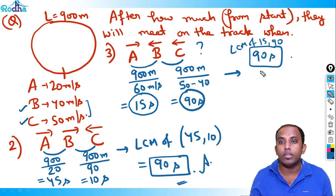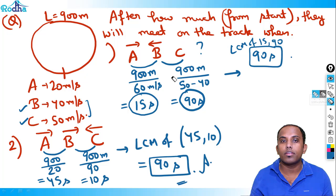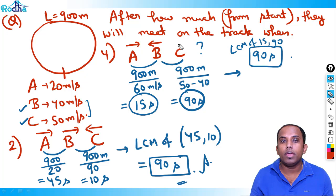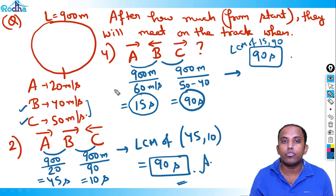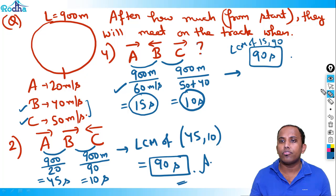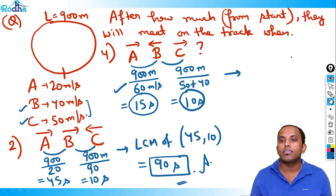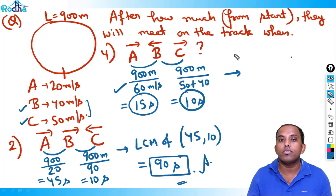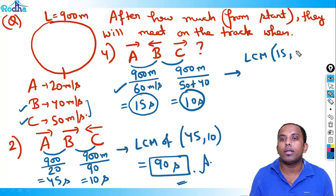Fourth case: A and B opposite, B and C also opposite. A and B: 900 / (20 + 40) = 15 seconds. B and C: 900 / (40 + 50) = 900 / 90 = 10 seconds. LCM of 15 and 10 = 30 seconds. So all three meet after 30 seconds in this case.